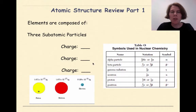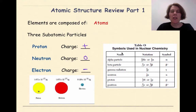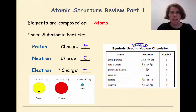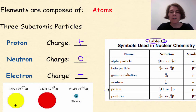So let's start with the basics. Elements are composed of atoms. Three subatomic particles make up an atom: protons, neutrons, and electrons. The charge on a proton is positive. The charge on a neutron is neutral, so we put in a zero. The charge on an electron is negative. There is reference table O in your reference tables that can help you if you forget the different types of subatomic particles and the overall charge. The proton is listed with a charge of plus one. The neutron is listed — N for neutron — and it's neutral.